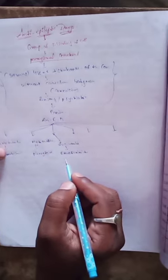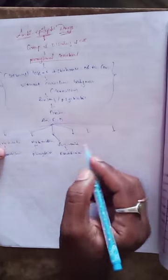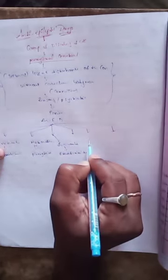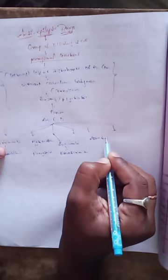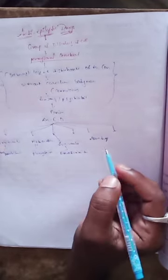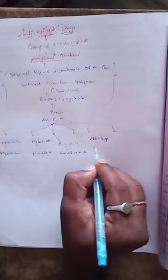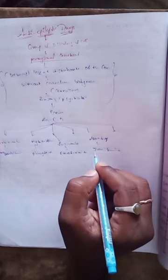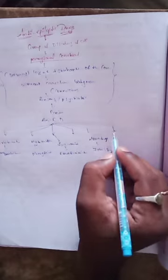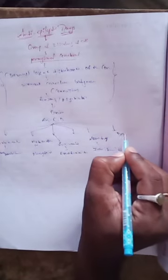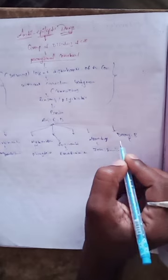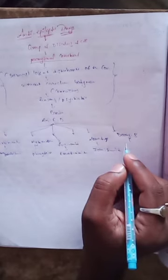The next classification is new drugs — example is zonisamide. And the next one, deoxybarbiturates — example is primidone. There are many more classifications; these are some with examples.